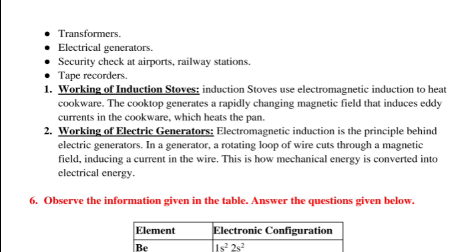2. Working of electric generators. Electromagnetic induction is the principle behind electric generators. In a generator, a rotating loop of wire cuts through a magnetic field, inducing a current in the wire. This is how mechanical energy is converted into electrical energy.